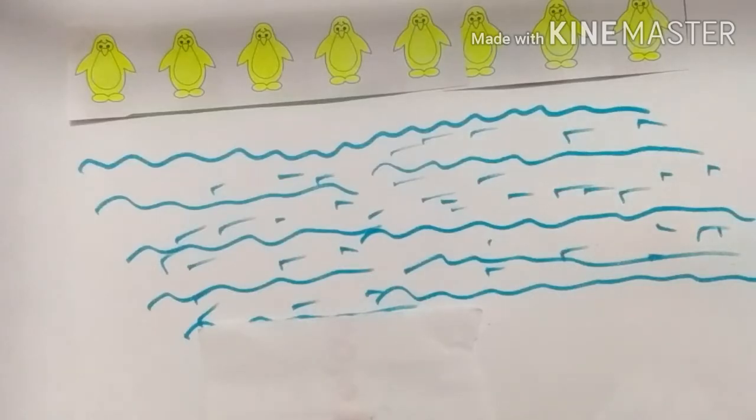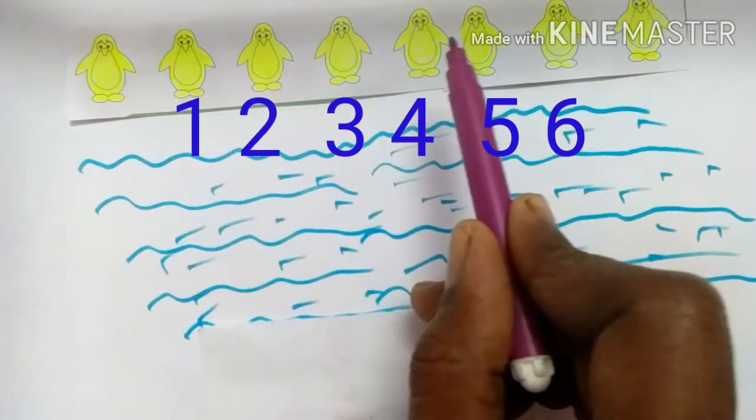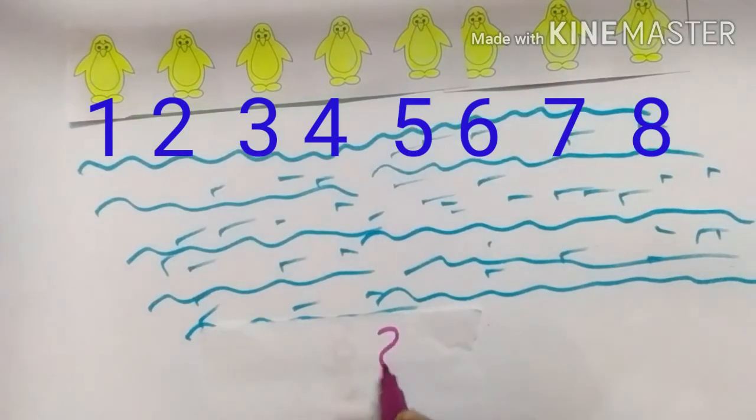What is this? This is penguin. How many penguins are there? 1, 2, 3, 4, 5, 6, 7, 8. Total 8 penguins.